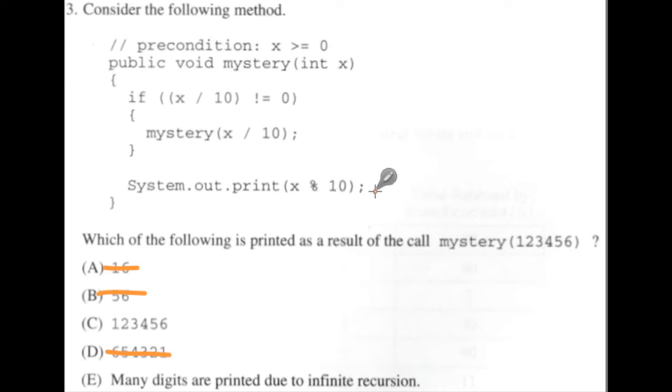It comes down and prints x modulo 10, right, which is 1, right? 10 goes into 1 0 times, and there's 1 left over, so that's 1. So there's, there's the very first thing that this prints is 1.